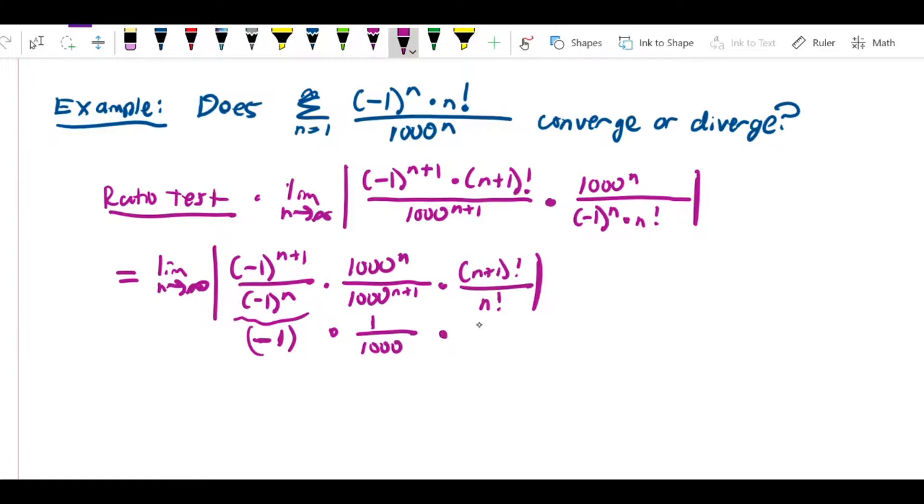And this is going to be n plus 1 times n factorial over n factorial, using that simplification that we saw earlier. So this is now going to be the limit as n approaches infinity of negative 1 times 1 over 1000, and here we get that cancellation, so that's going to be times n plus 1.